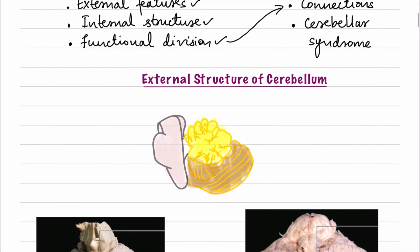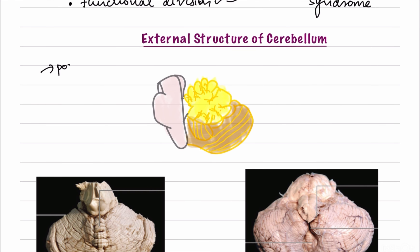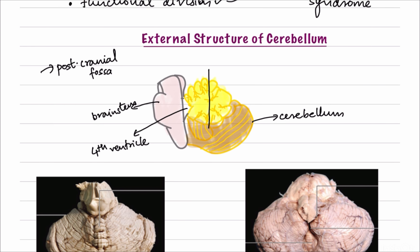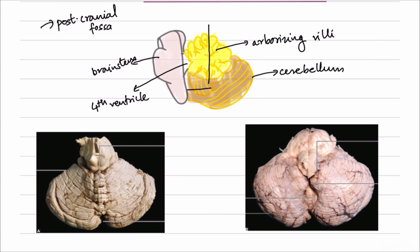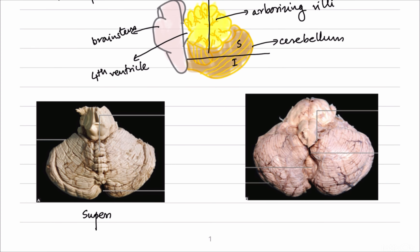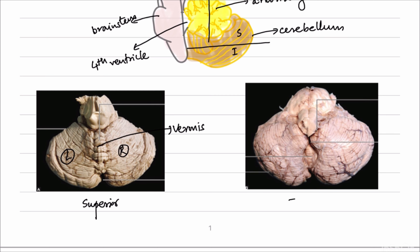Let's begin with the external structure of cerebellum. The cerebellum is located posteriorly in the posterior cranial fossa, behind the brainstem and the fourth ventricle. When we take a transverse section of the cerebellum we have a tree-like pattern known as the arbor vitae. Cerebellum is divided into superior and inferior halves. On the superior surface, the right and left halves are separated by a midline structure called the vermis. On the inferior surface, there is a depression known as the paramedian sulcus instead of a vermis.